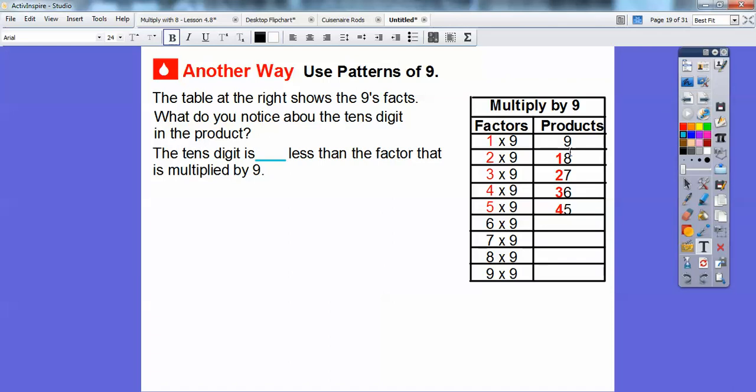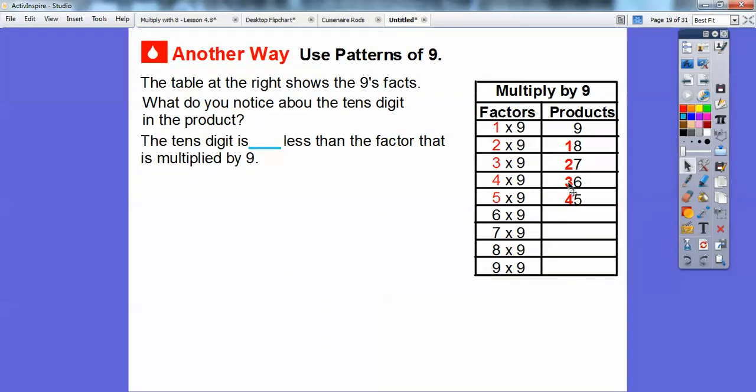Well, what do you notice about those tens digits? Well look, these numbers are one, two, three, four, and look over here. The numbers we're multiplying. It's two, three, four, five.